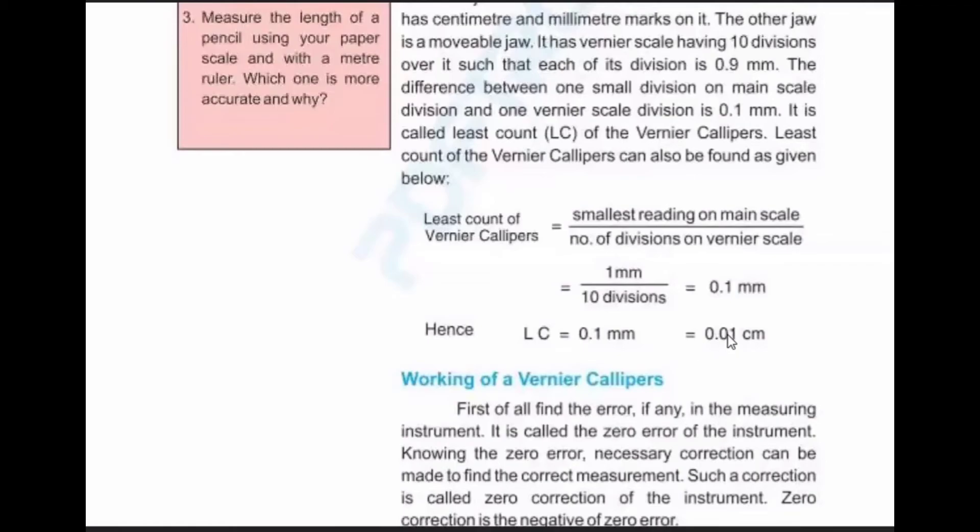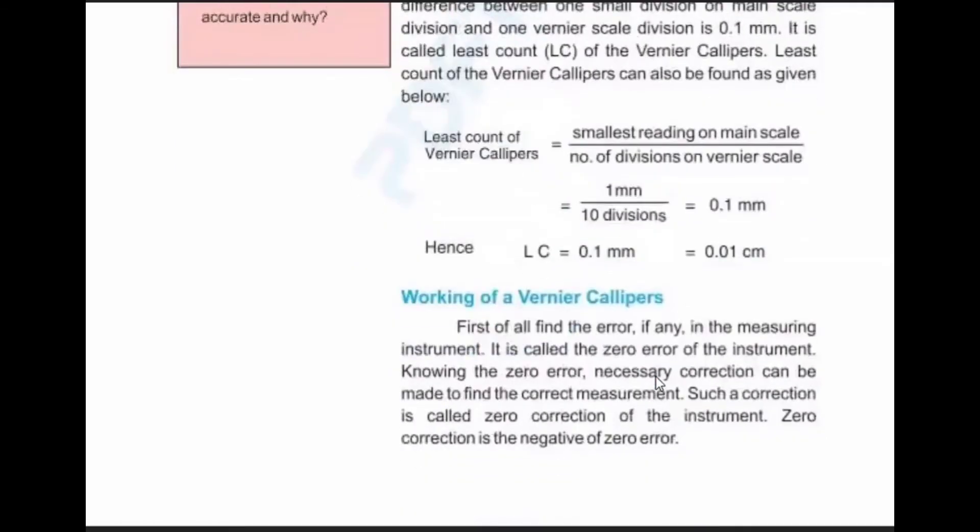Working with a Vernier caliper: First of all, find the error if any in the measuring instrument. It is called the zero error of the instrument. Knowing the zero error, necessary correction can be made to find the correct measurement. Such a correction is called zero correction of the instrument. Zero correction is the negative of zero error.